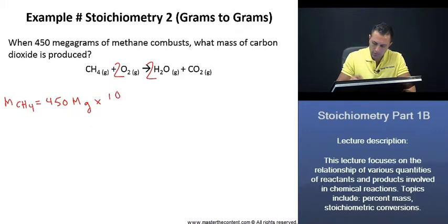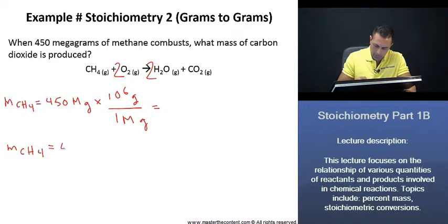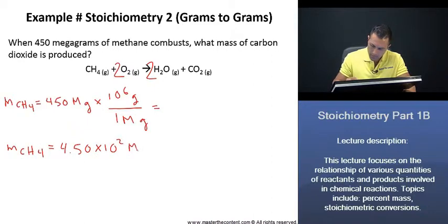It's going to be, our conversion factor is going to be 10 to the 6 grams over 1 megagram. Now, to make this problem even easier, what we can actually do is write our megagrams in their scientific notation as such: 4.50 times 10 to the power of 2 megagrams. This is going to be 10 to the power of 6 grams, 1 megagram. Here we are. Wonderful.